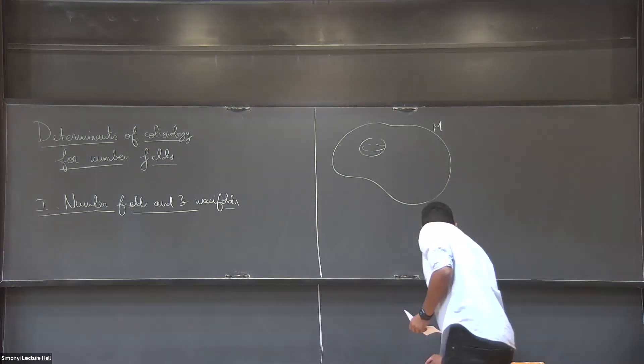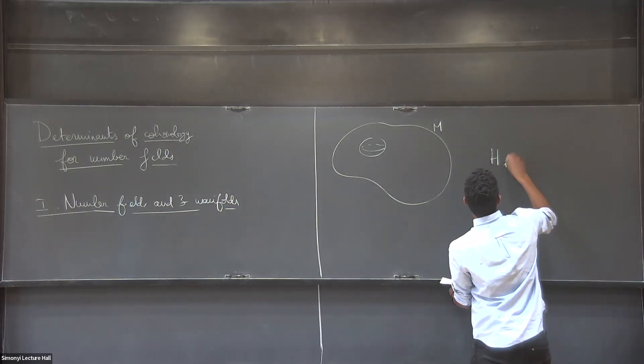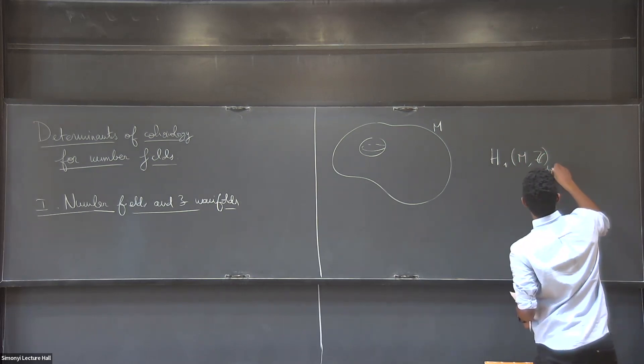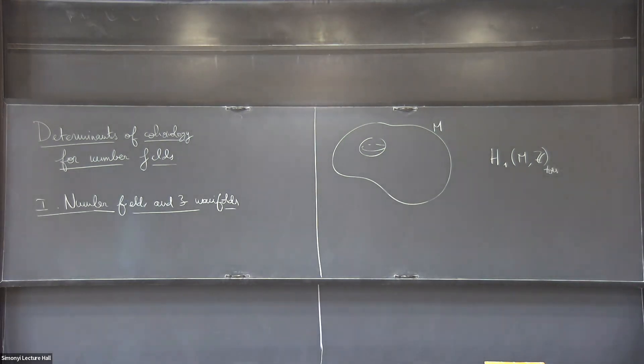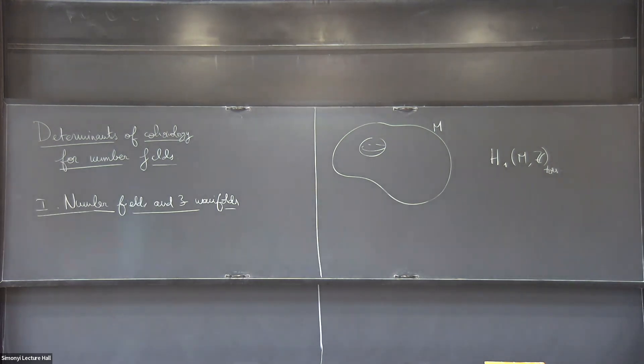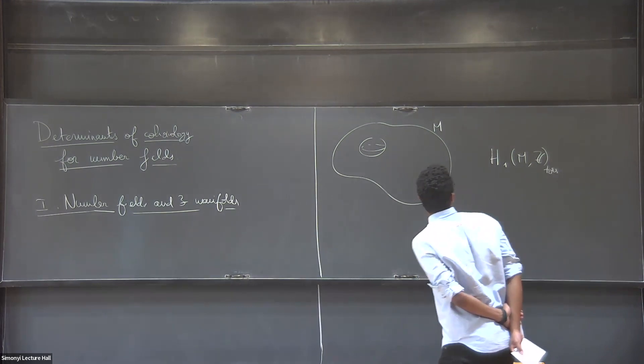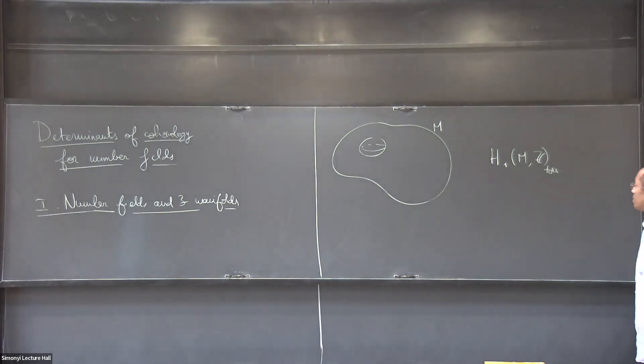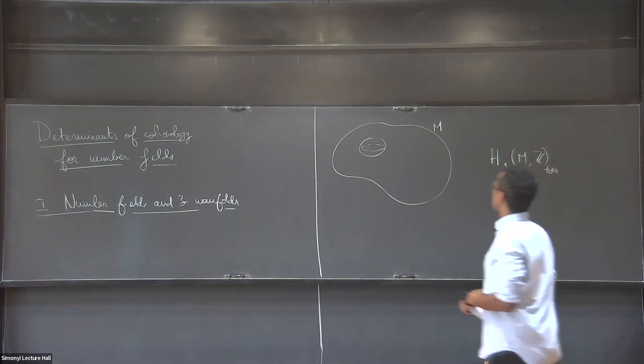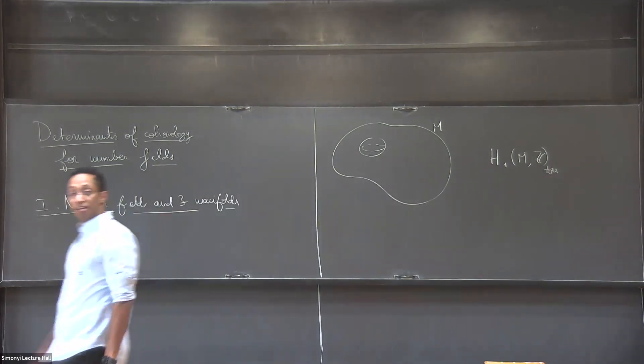In particular, we're going to focus on one of these homology groups, which is the first cohomology, H1(M,Z) torsion. We're going to focus on the torsion part. So in general, H1(M,Z) is just an abelian group. If your manifold is compact and finitely generated, what this represents is you can think of elements in here as circles in your three-manifold up to the boundary of surfaces embedded in your manifold.